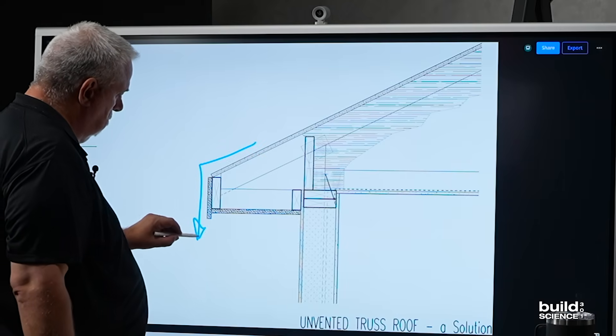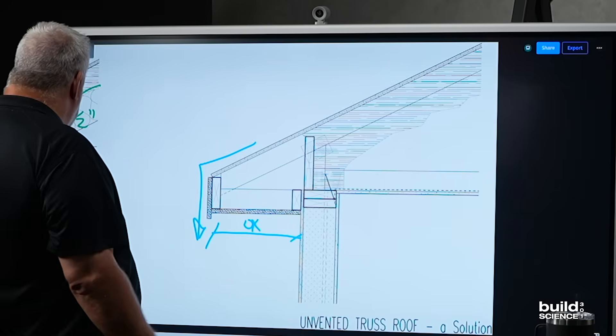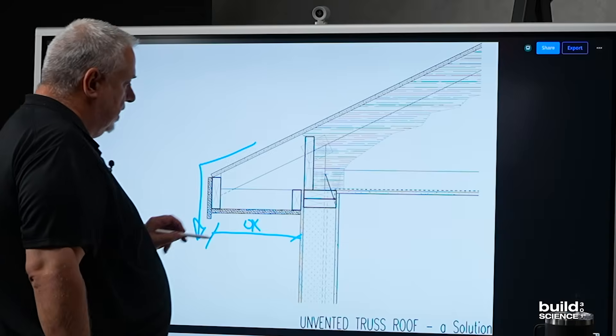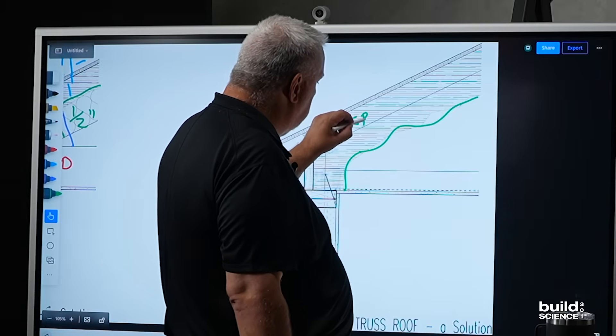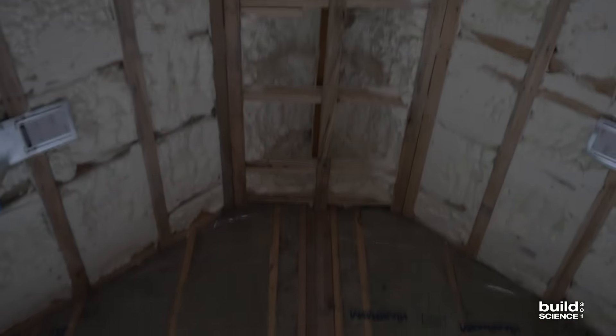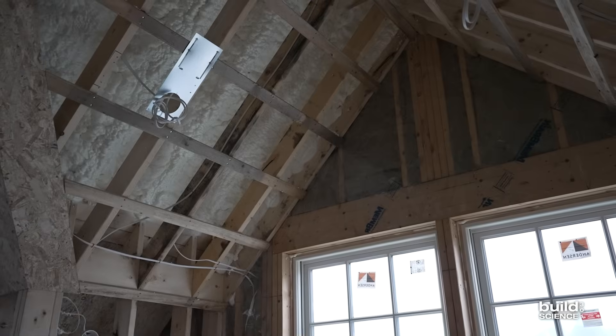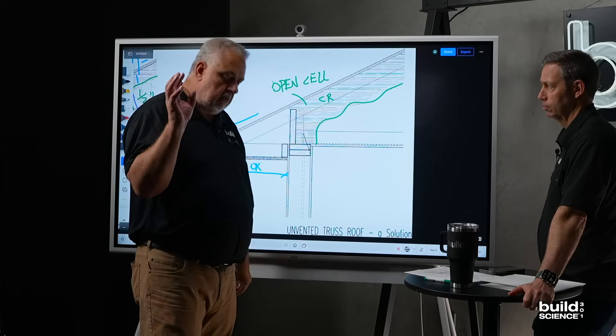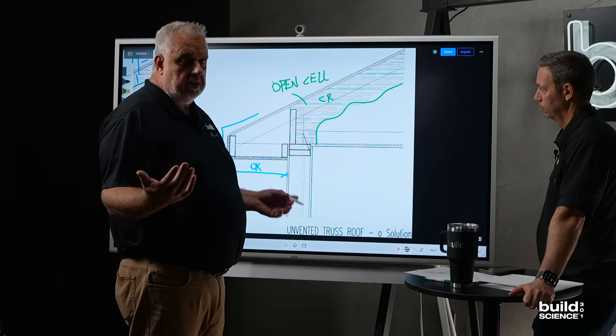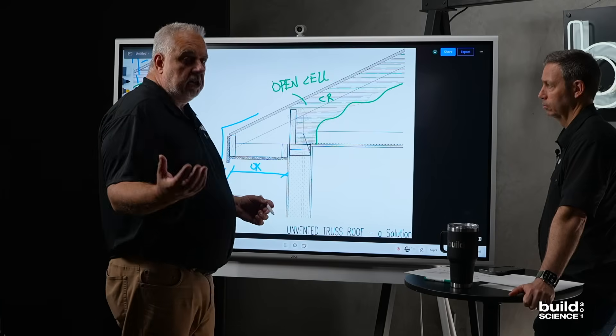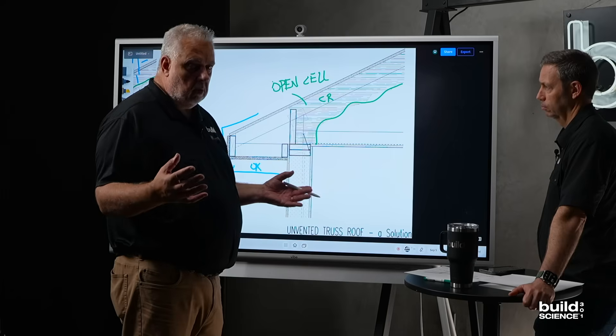You know, since we're talking about challenges and solutions, one of the things I want to point out, because I know there's somebody watching that's saying, oh, my God, Steve, I can't believe you're suggesting that we use open cell foam. One of the challenges in the building industry that I've come to understand, because we work all over the country, I can put cellulose in the drawings and go to Texas, but the conversation always ends up something like, well, we can probably do cellulose. I think we might be able to find somebody that can do it.